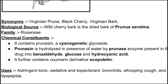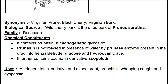The chemical constituent of wild cherry bark: it contains prunacin, which is a cyanogenic glycoside. Prunacin is hydrolyzed in the presence of water by prunasin enzymes present in the drug, yielding benzaldehyde, glucose, and hydrocyanic acid.